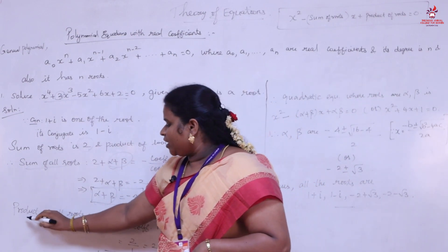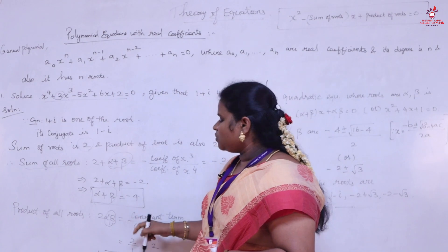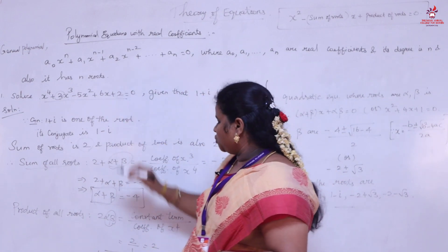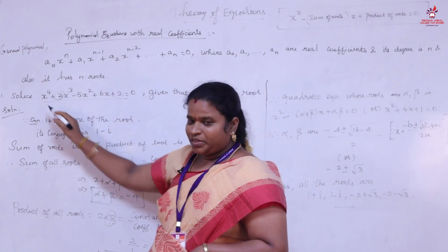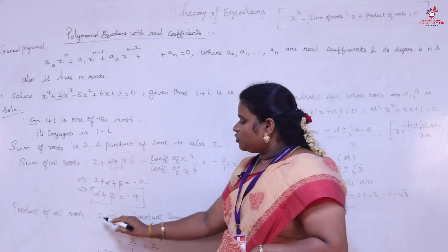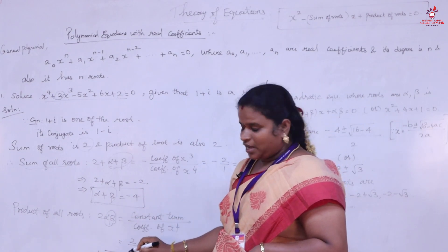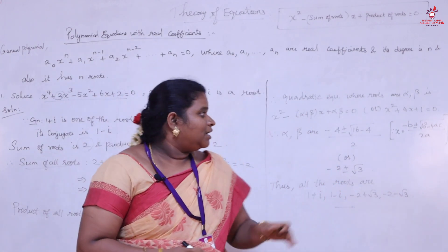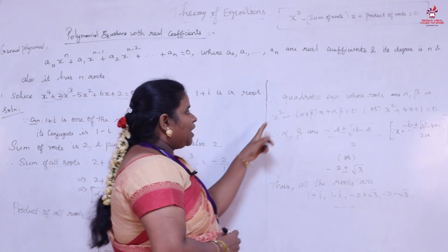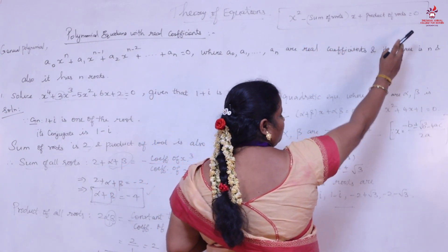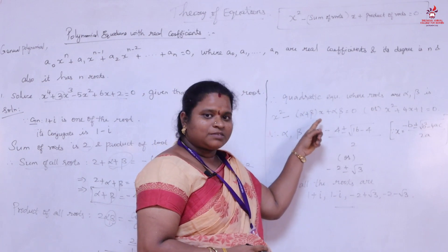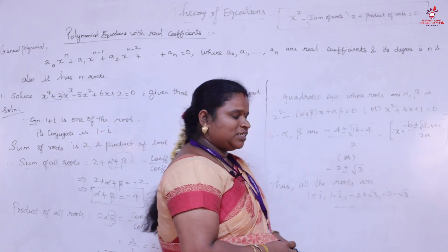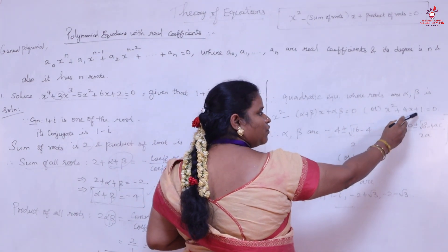Similarly, the product of all roots: 2 · αβ = constant term / coefficient of x⁴ = 2/1 = 2, so αβ = 1. Now that we have α + β = −4 and αβ = 1, we form the quadratic equation: x² − (α + β)x + αβ = 0, which gives x² − (−4)x + 1 = 0, i.e., x² + 4x + 1 = 0.